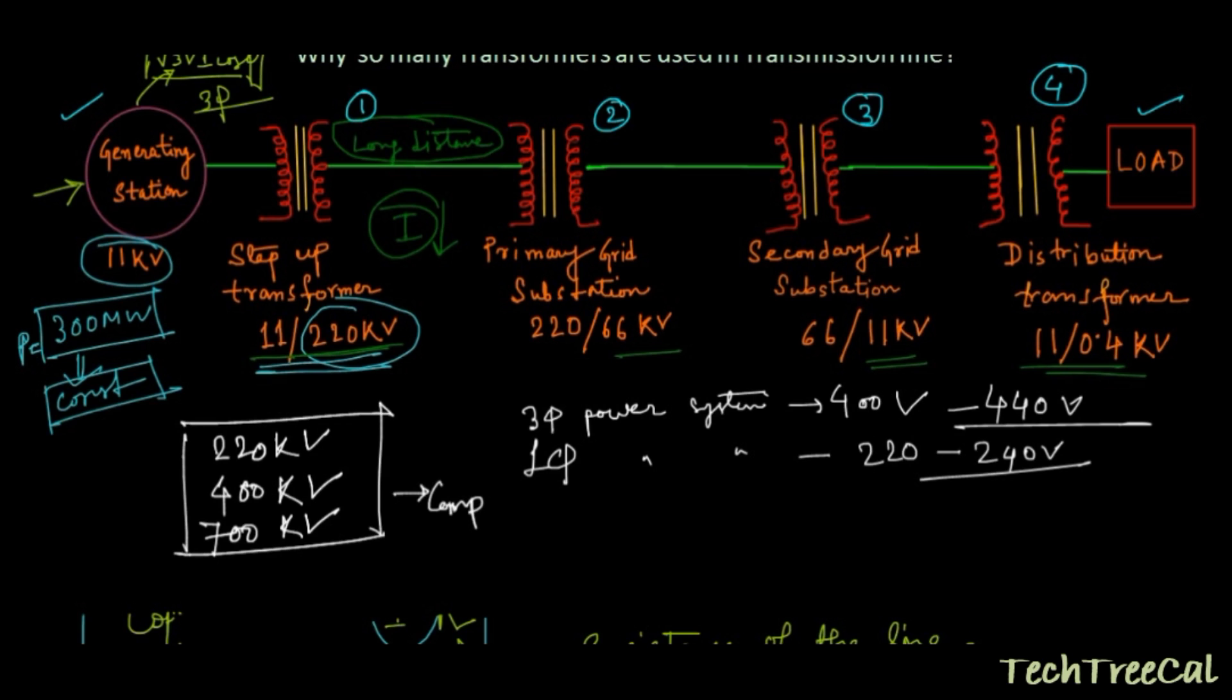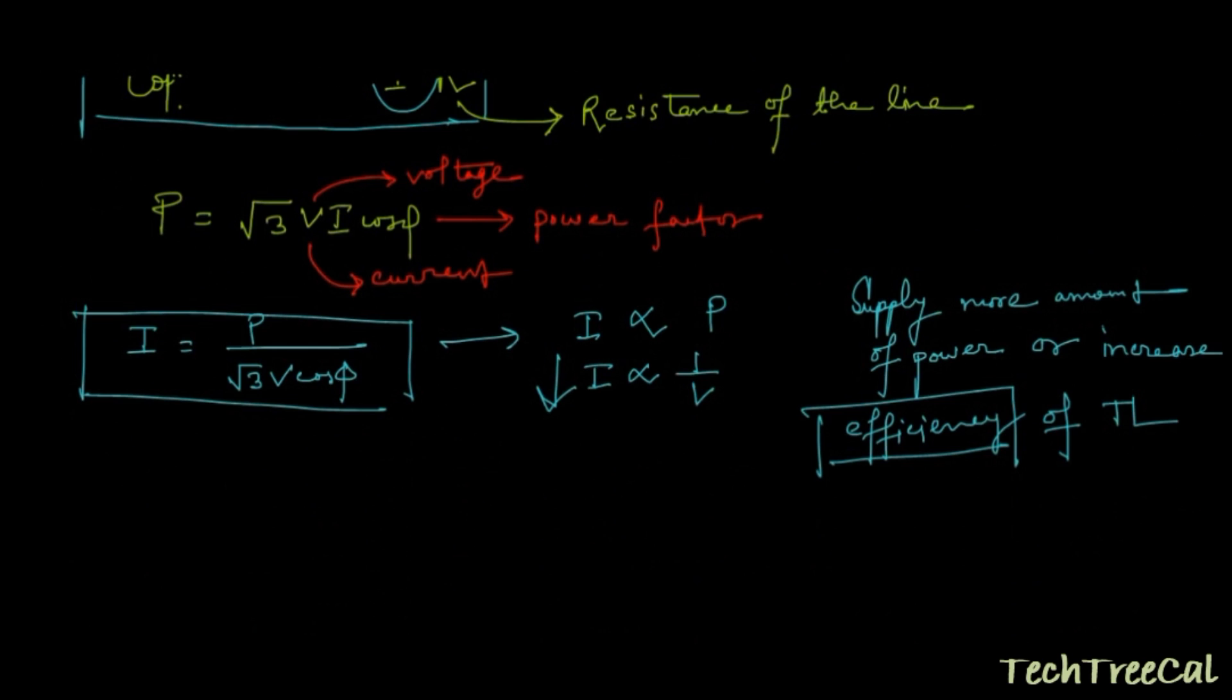So what we really understood is that essentially we need to decrease the value of the current by increasing the voltage so that we could decrease the copper loss and increase the efficiency of the transmission system. I hope you have understood the basic concept here. If any queries, please do mention in the comment section below.